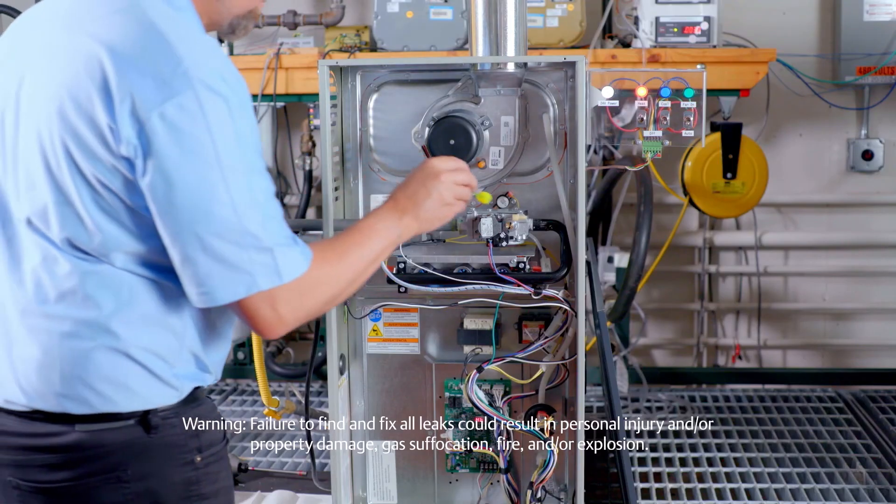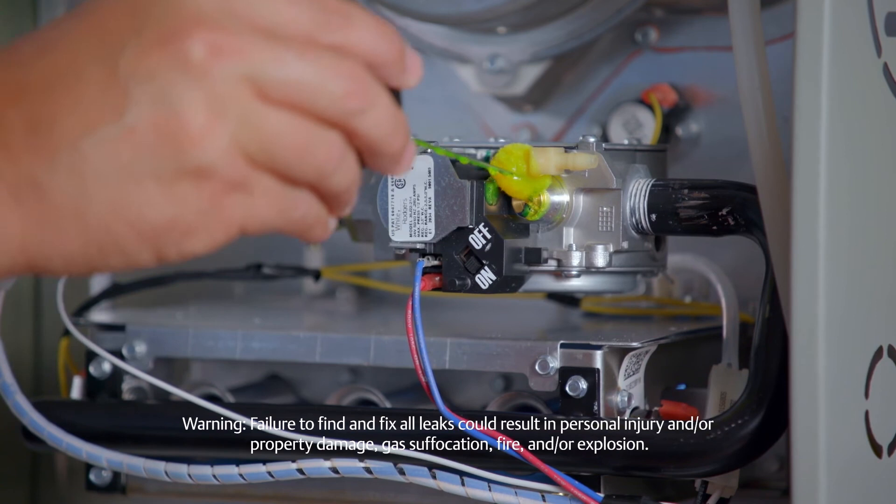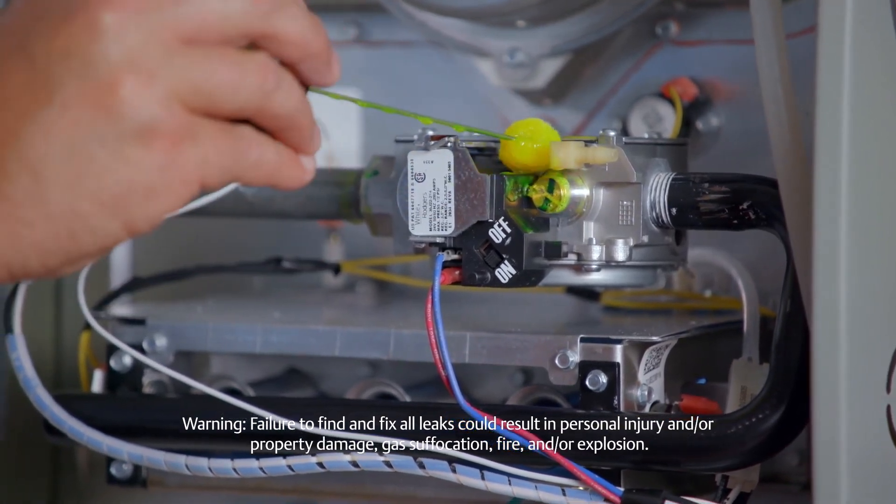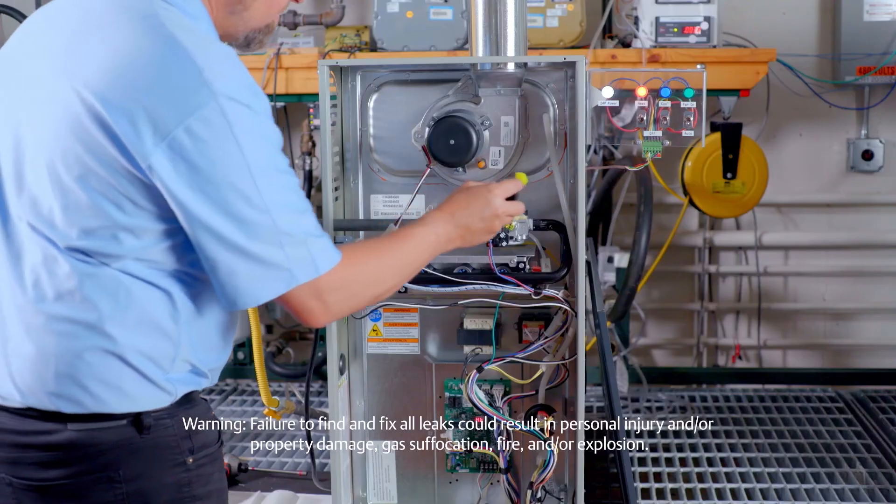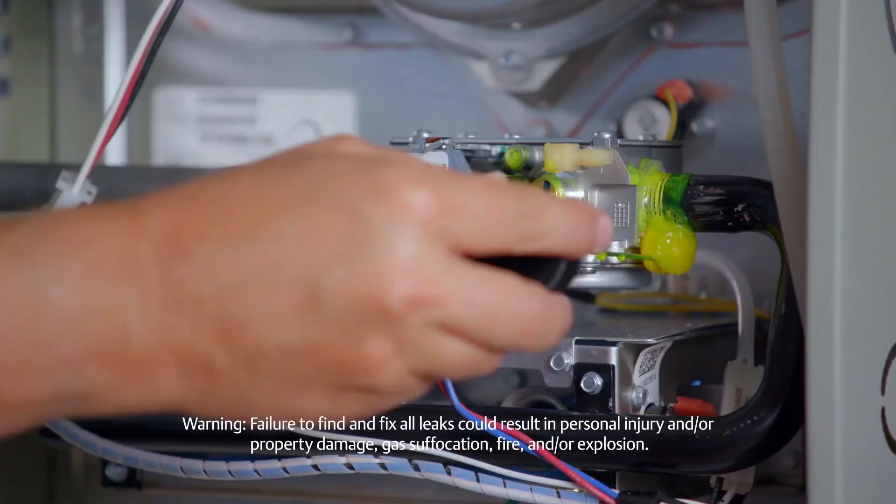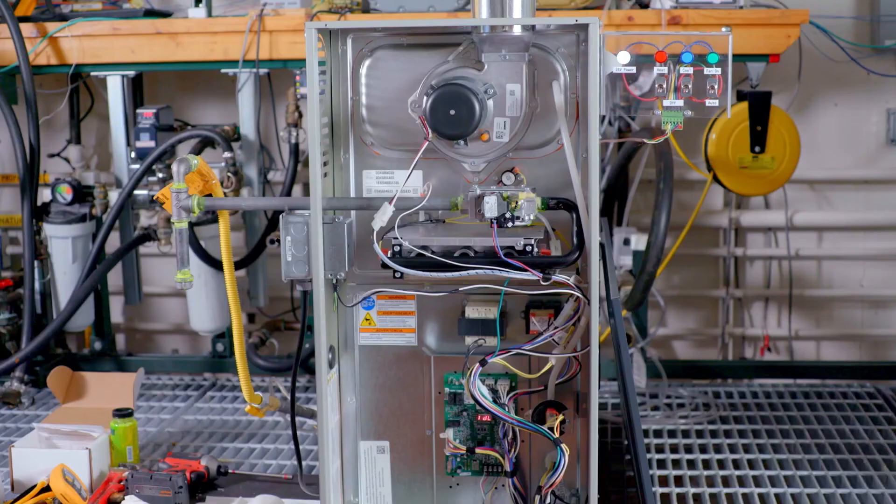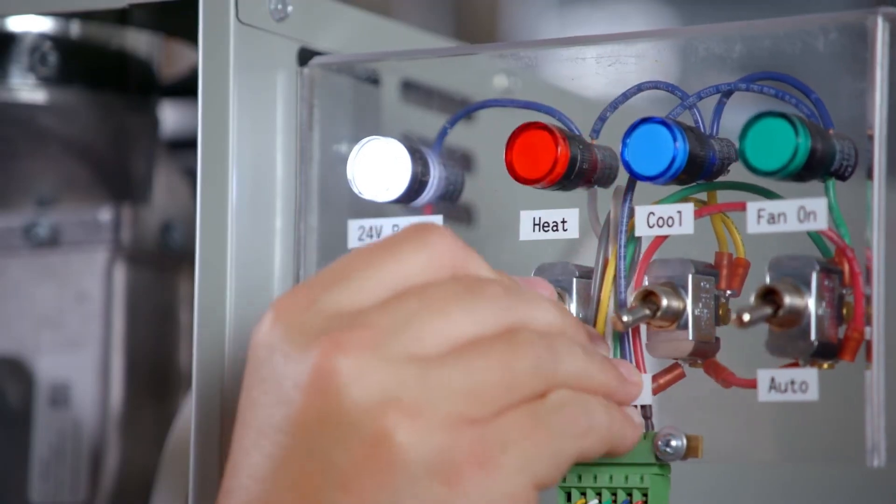Check for leaks, including the regulator and outlet pressure post. Bubbles forming indicate a leak. Should a leak be indicated, shut off gas and fix all leaks immediately. Finalize any work and terminate the call for heat.